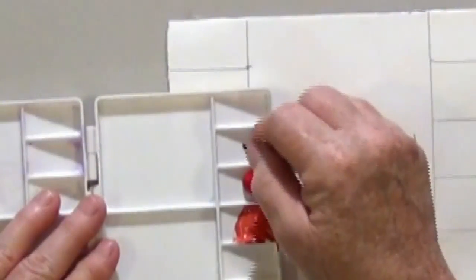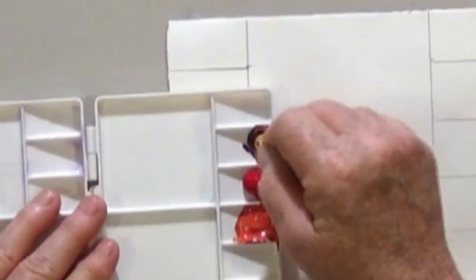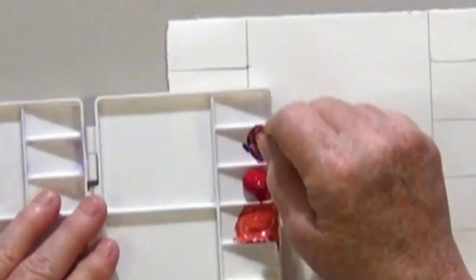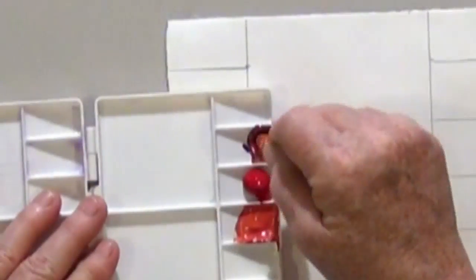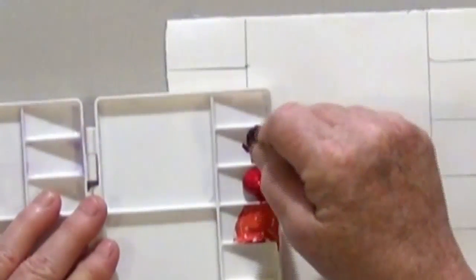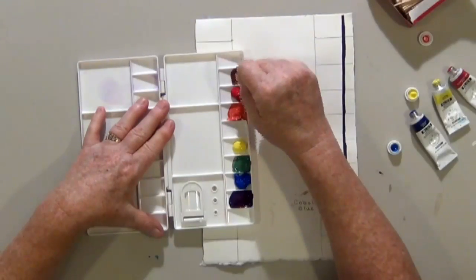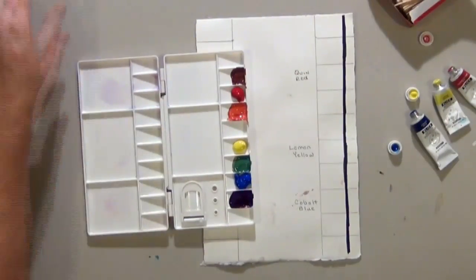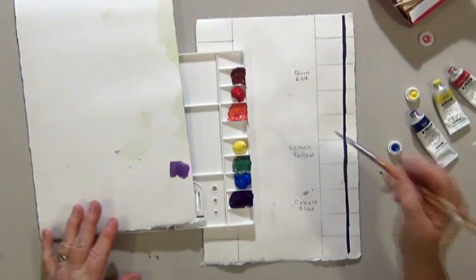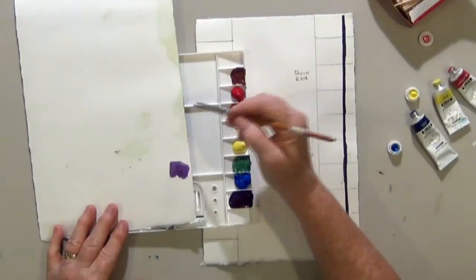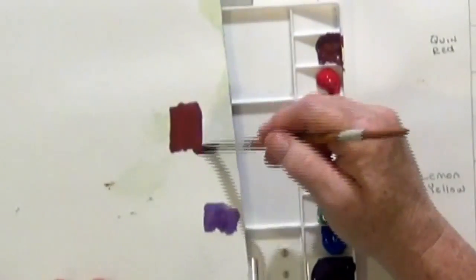So red, yellow, and blue can make a lot of different shades depending on how much red, how much yellow, and how much blue. Would you call that a brown?